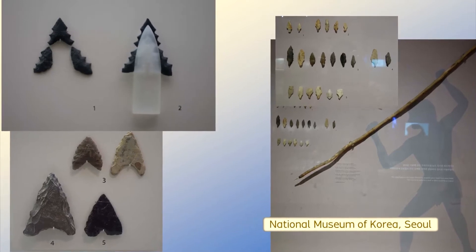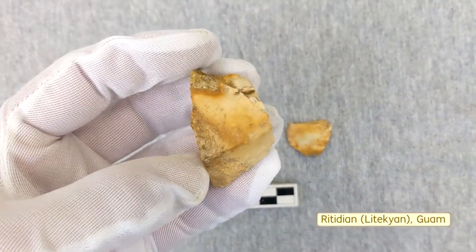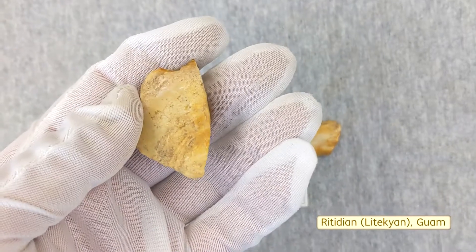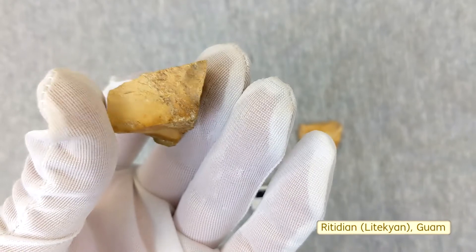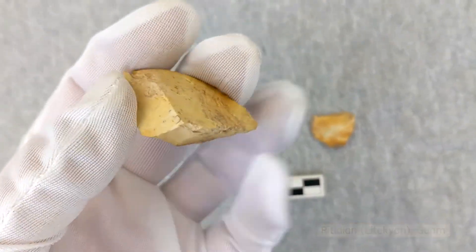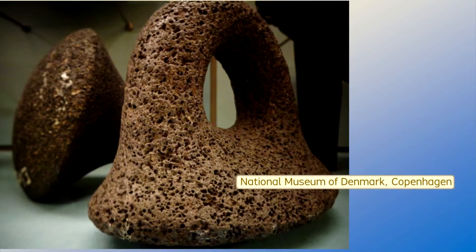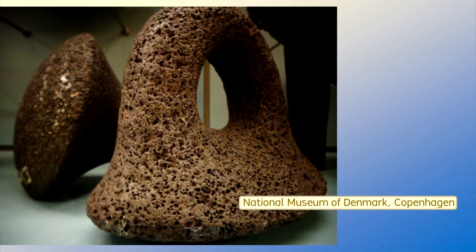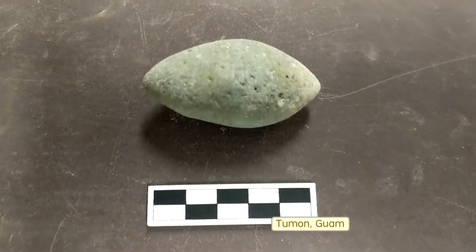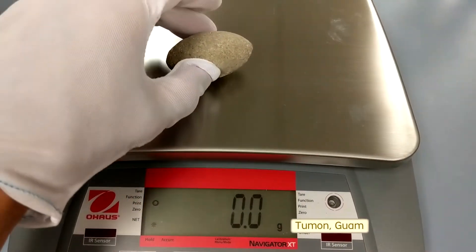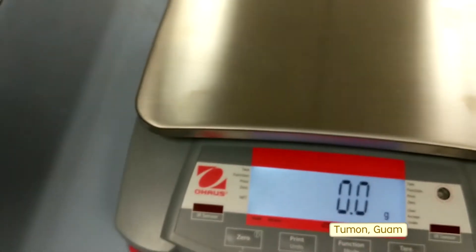Whenever I encounter a stone artifact, I begin studying it with two fundamental observations. First, I attempt to identify the raw material, or at least notice the physical qualities. Is the object made of a fine-grained stone that could be chipped, polished, and sharpened? Is it made of a porous stone that could be abraded or grinded into various shapes? Second, I measure the physical characteristics. The shape and dimensions are easy for anyone to record. The weight should be noted as well toward describing the density of the raw material and the ability for a person to handle and manipulate an object.